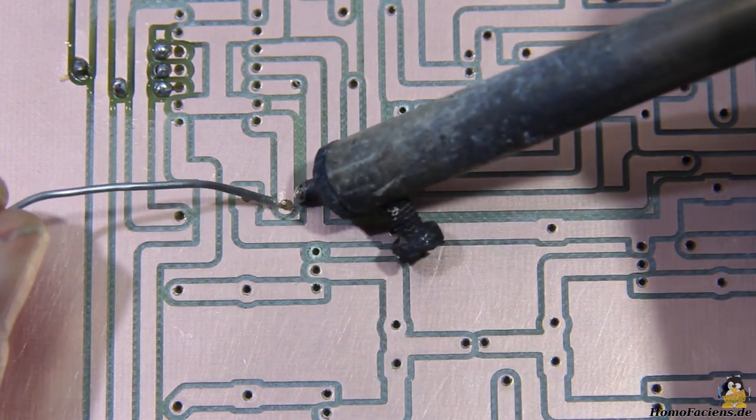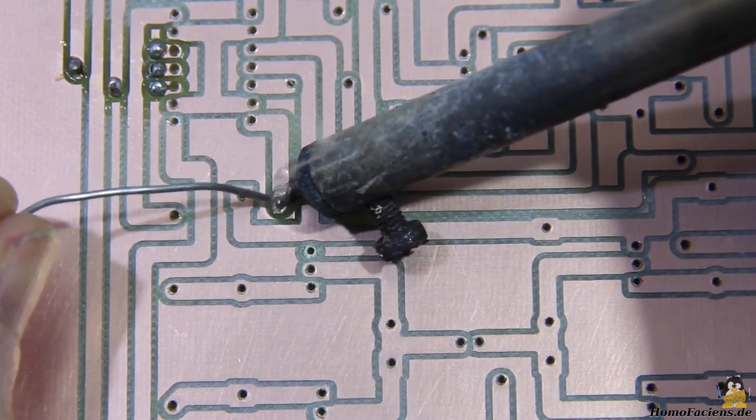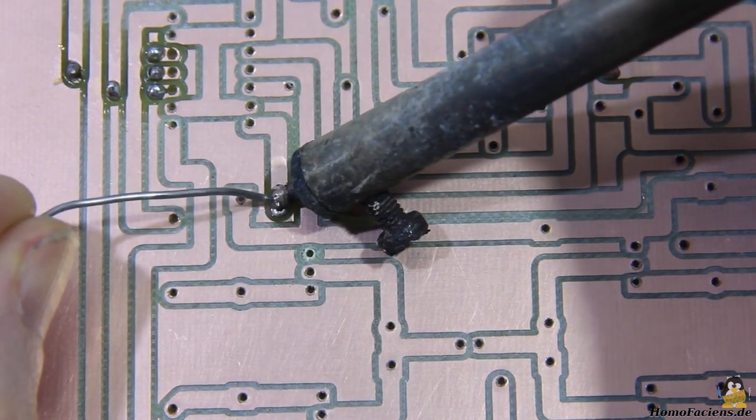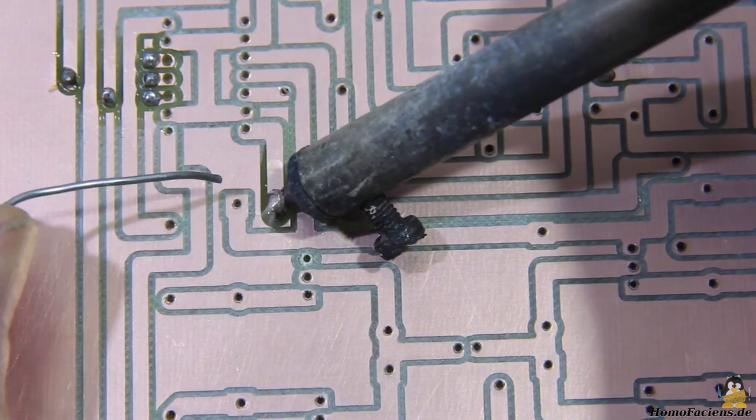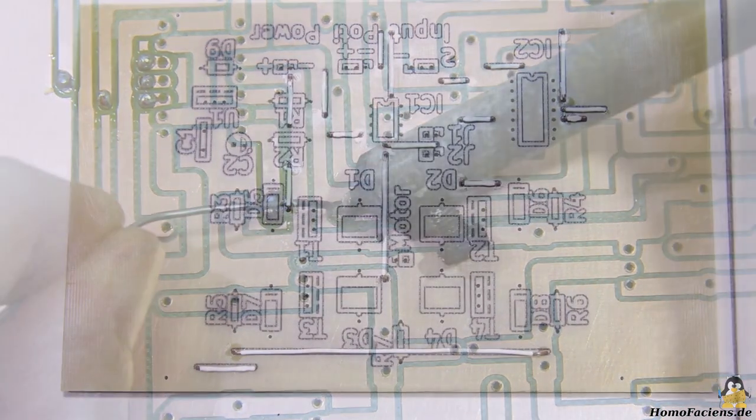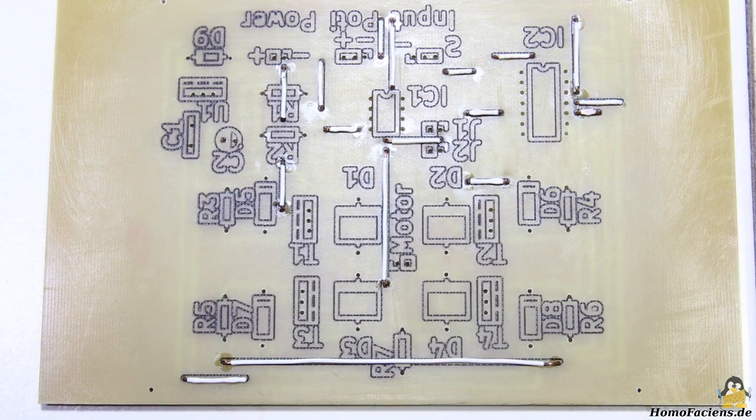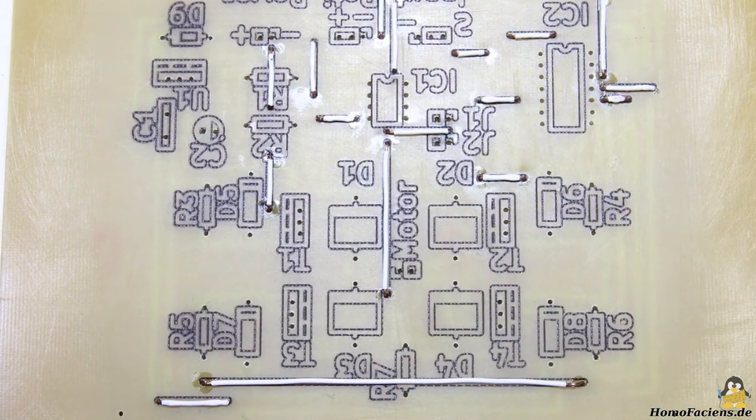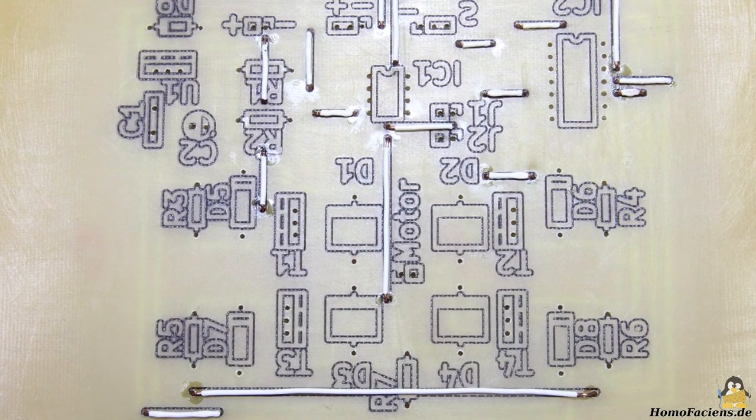So I switched on my good old soldering iron to start assembly. Since I was using a single sided circuit board, some connections to the lower copper tracks are made via bridges on the top.